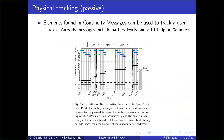For the physical tracking passive attack, we found that continuity messages can embed elements used to track a user. In particular, AirPod earphone messages include the battery levels and a lid open counter that can be used for tracking. The lid open counter is incremented each time the lid is opened, and its value lasts longer than the lifetime of a device address and is not reset between two usage sessions. This suggests that the counter and battery levels can be used by a passive attacker to link two consecutive addresses, defeating the purpose of address randomization.